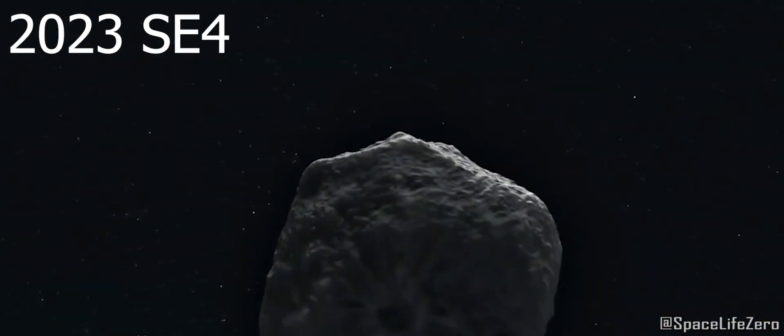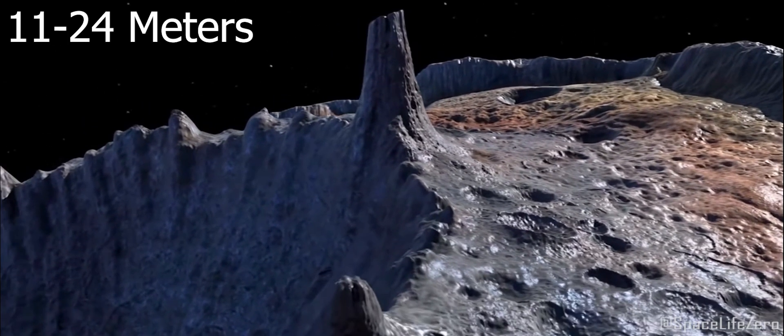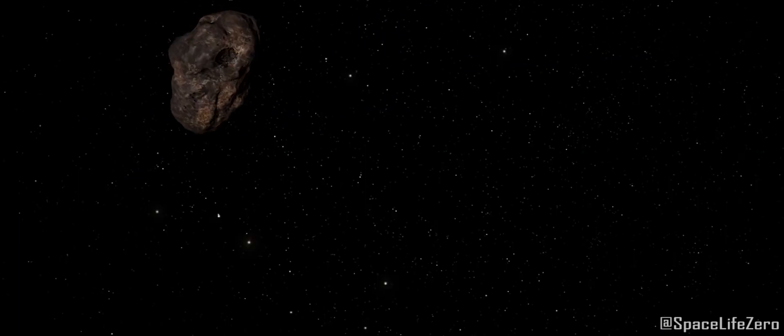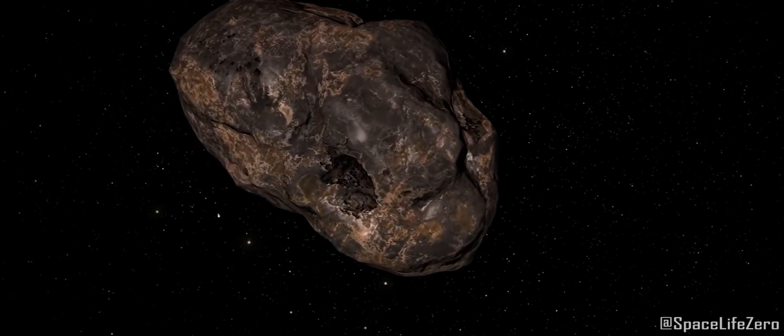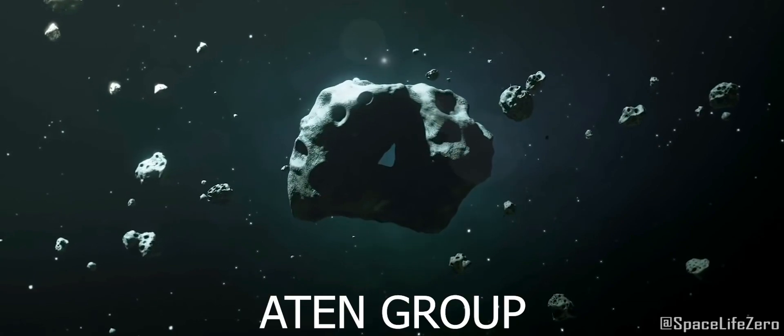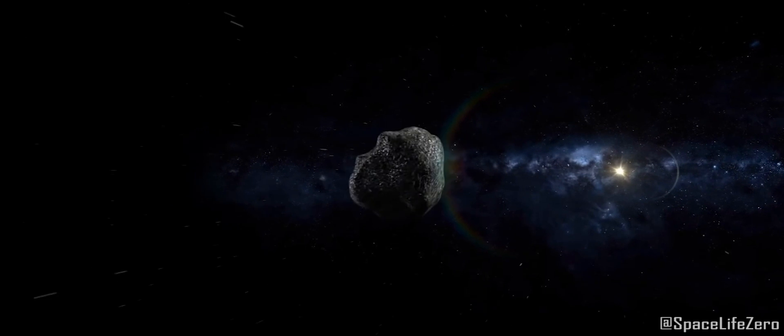Asteroid 2023 SE-4: Its size is estimated in the range from 11 to 24 meters. This asteroid was first discovered on September 20, 2023, and it belongs to the Aiton Group. It makes one orbit around the Sun in 337 days.